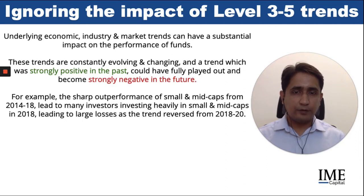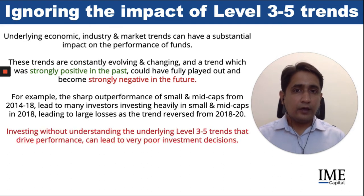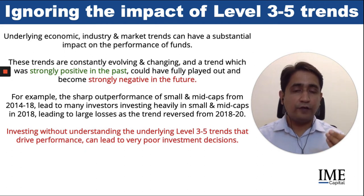As an example, the very strong outperformance seen by small and mid caps from 2014 to 2018 led to investors investing very heavily in small and mid caps in 2017 and 2018 — a period where they were extremely overvalued — leading to very large losses as the strength reversed over 2018 to 2020. Investing without understanding the underlying level three to five trends that drive performance can lead to very poor investment decisions being made.